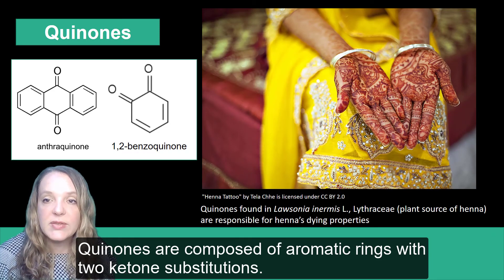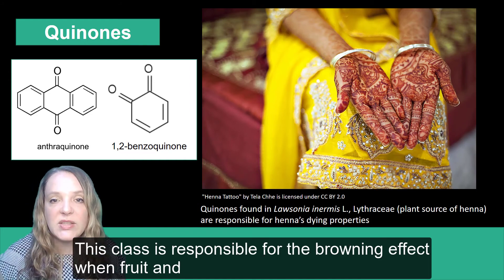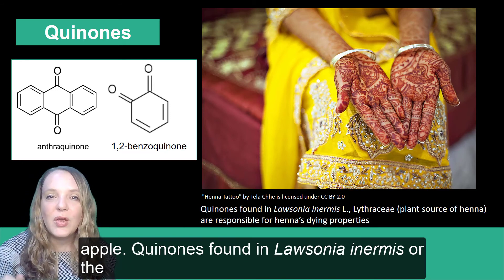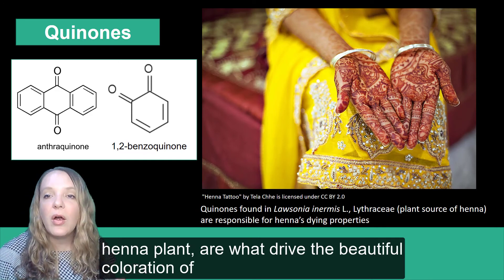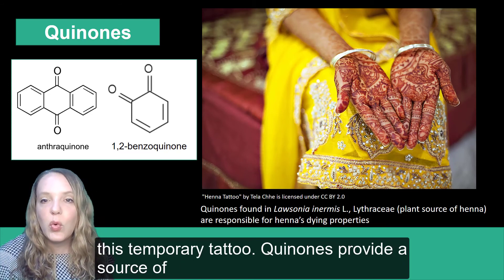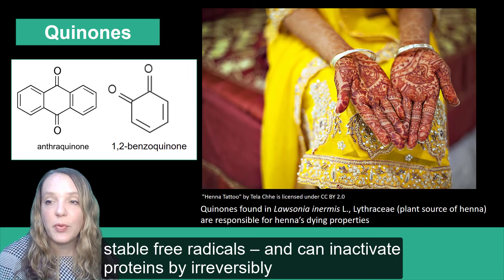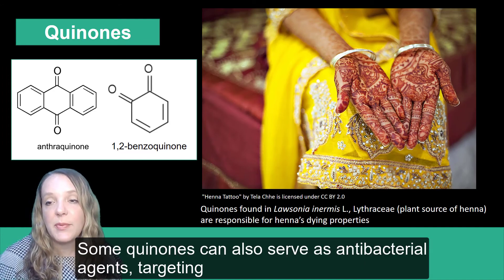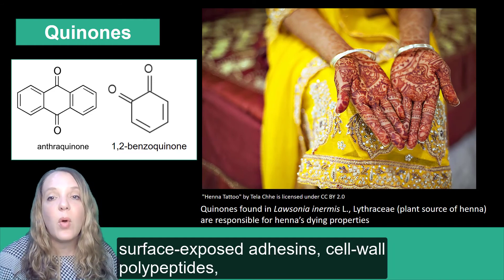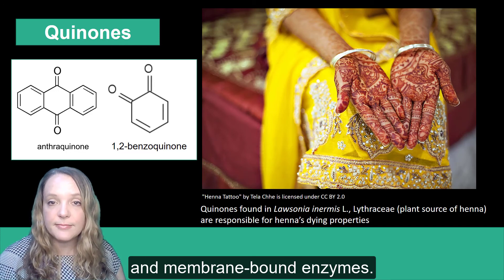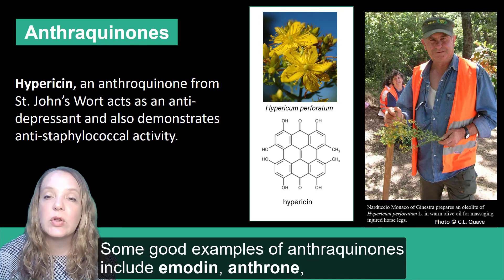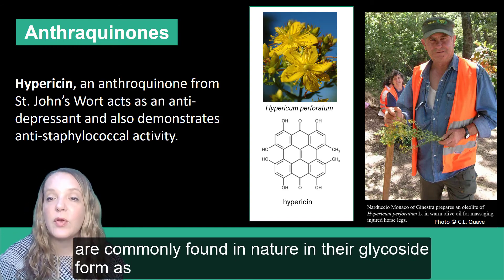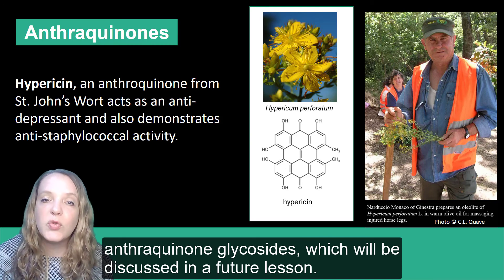Quinones are composed of aromatic rings with two ketone substitutions. This class is responsible for the browning effect when fruit and vegetables are cut — a good example of this is a cut apple. Quinones found in Lawsonia inermis, or the henna plant, are also what drive the beautiful coloration of henna temporary tattoos. Quinones provide a source of stable free radicals and can inactivate proteins by irreversibly complexing with nucleophilic amino acids. Some quinones can also serve as antibacterial agents targeting surface-exposed adhesins, cell wall polypeptides, and membrane-bound enzymes. Good examples of anthraquinones include emodin, anthrone, dianthrone, and anthraquinone. Anthraquinones are commonly found in nature in their glycoside form as anthraquinone glycosides, which will be discussed in a future lesson.